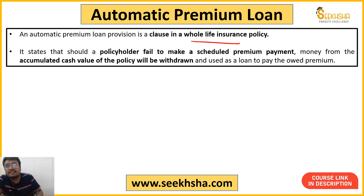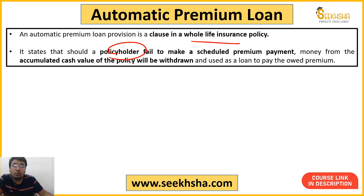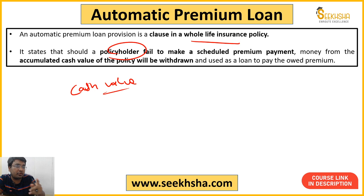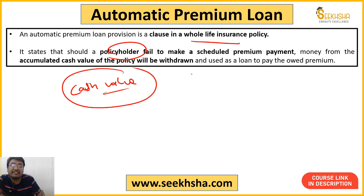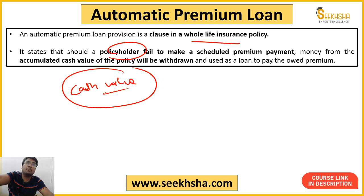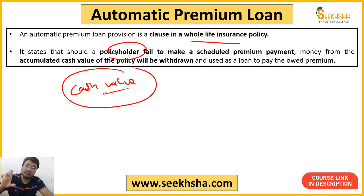Now if in some year a policy holder forgets to pay their premium, what will happen? The cash value accumulated so far — automatically, as a loan from this cash value, that premium will be paid. And then the owner will be told: a loan of this much has been added, because we paid your premium from the cash value. So you should replenish it. This is the Automatic Premium Loan concept.